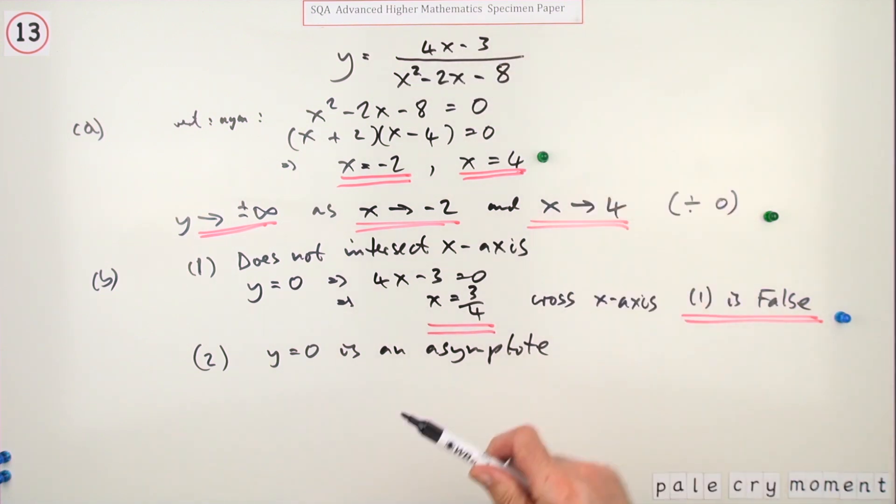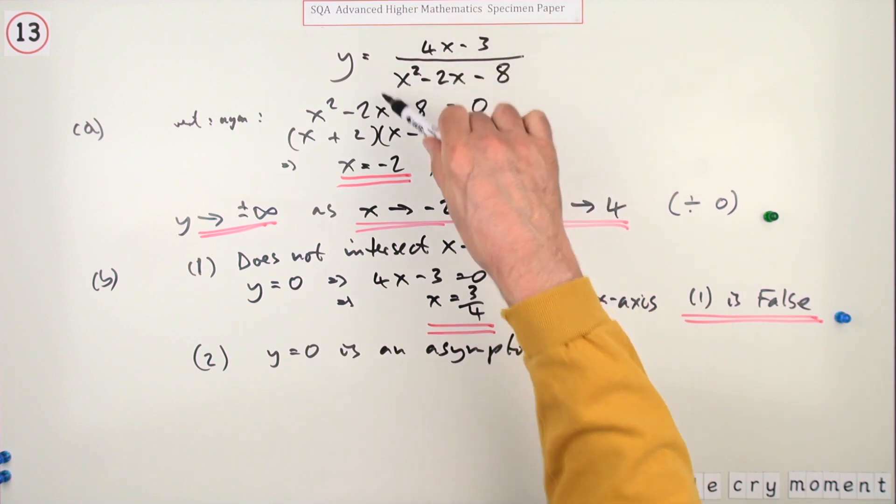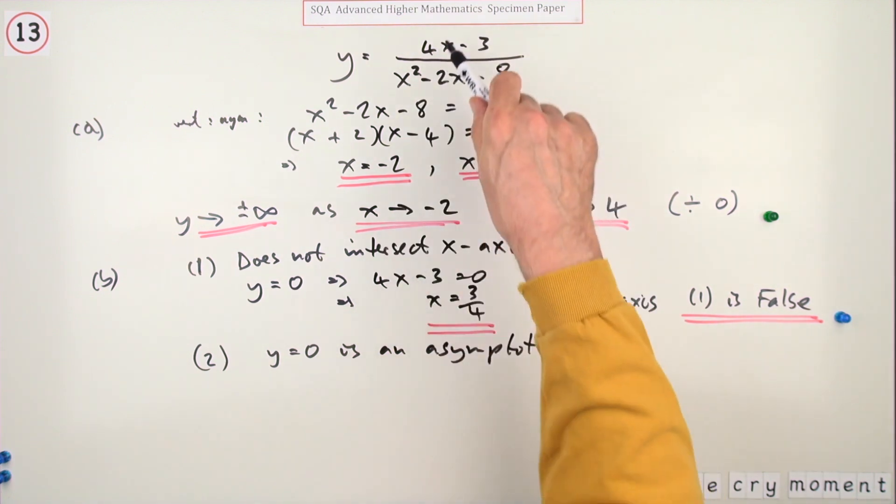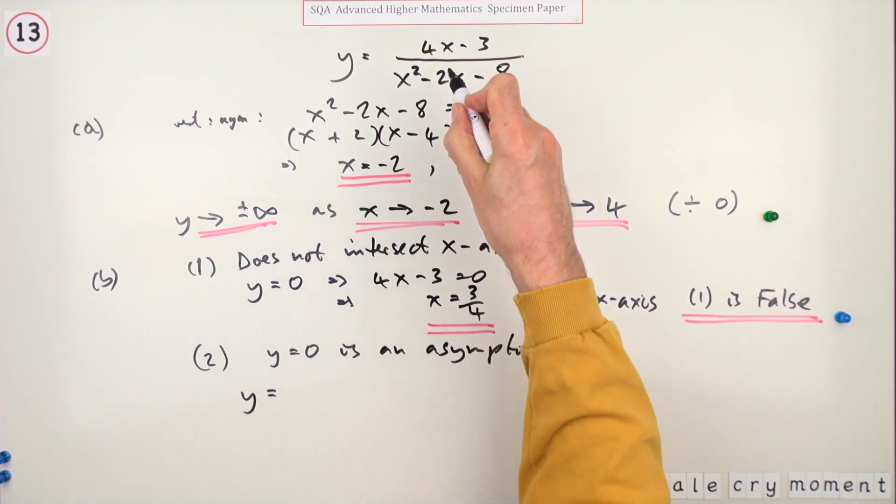They'll overpower the other terms. The top one is a degree less than the bottom one, so it's a proper fraction, and that fraction will tend to zero. But how do you show that? Well, you could just rewrite it this way. This term there, I've got is x squared. Divide everything by x squared.